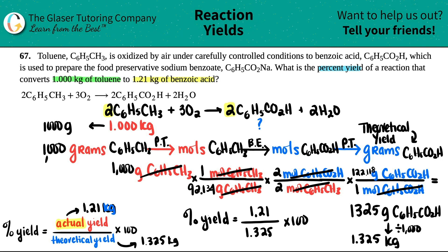So let's figure out what the theoretical yield is. So 1,000 divided by 92.134, two divided by two is one, so I'm not even going to worry about that, and then times 122.118. And I basically get 1,325 grams of the C6H5CO2H.